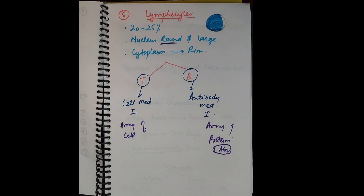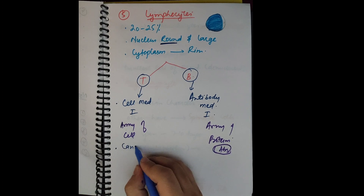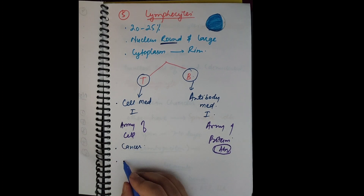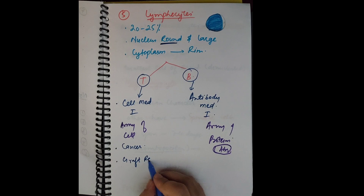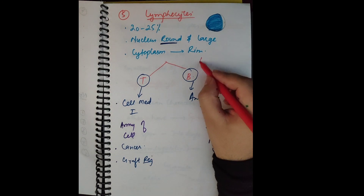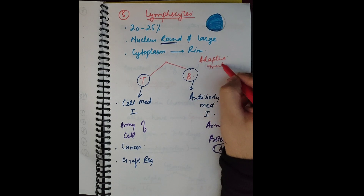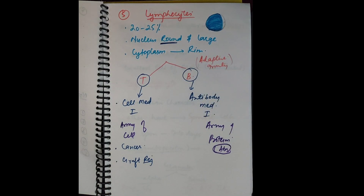Cell-mediated immunity, carried out by T cells, also performs two very important functions: it is involved in cancer immunity and in graft rejection. There are different types of T lymphocytes such as helper T cells and cytotoxic T cells, which will be covered in the immunity chapter. Overall, lymphocytes play a very important role in adaptive immunity.